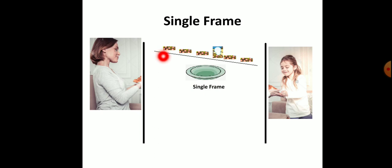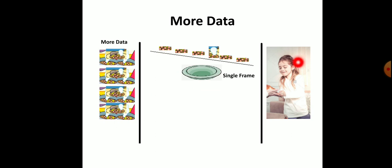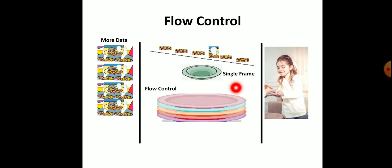As the food is very good, the girl finds there is more and more food available — in our terms, this means more data. She knows she cannot accommodate it in a single plate, that is, a single frame. So she wants to give multiple plates — she's calculating how many plates are required to accommodate all the food. She gives that many plates to her mom to serve. This is called flow control.